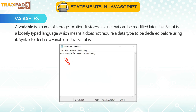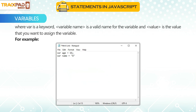A variable is the name of a storage location. It stores a value that can be modified later. JavaScript is a loosely typed language, which means it does not require a data type to be declared before using it. The syntax to declare a variable in JavaScript uses var as a keyword, followed by a valid variable name, and the value you want to assign to the variable.